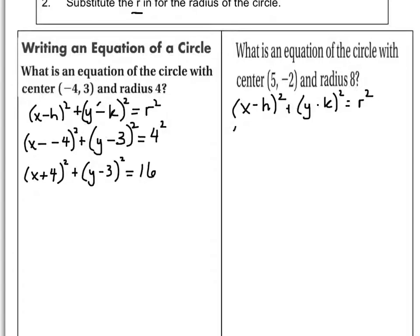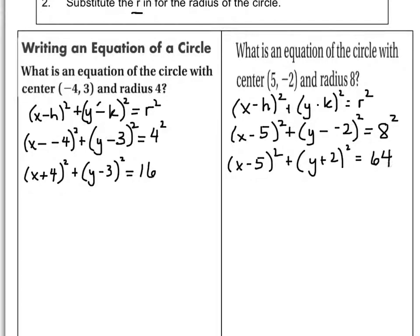H is 5 so I'm going to substitute that in. K is negative 2. Substitute that in. And R is 8 so I substitute that in as well. And I end up cleaning this up here. X minus 5 squared plus, and this becomes y plus 2 squared equals 8 squared is 64.